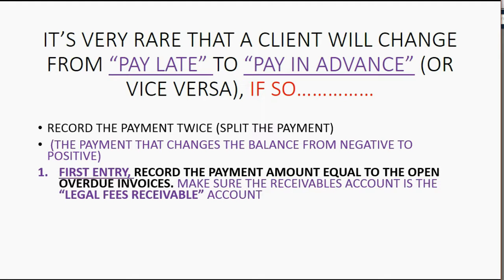Step one: record the entry and record the payment normally, except make sure that the money amount is equal to the open overdue invoices. Meaning, record it the way you normally would, but change the money amount to be only equal to the balance of the customer.